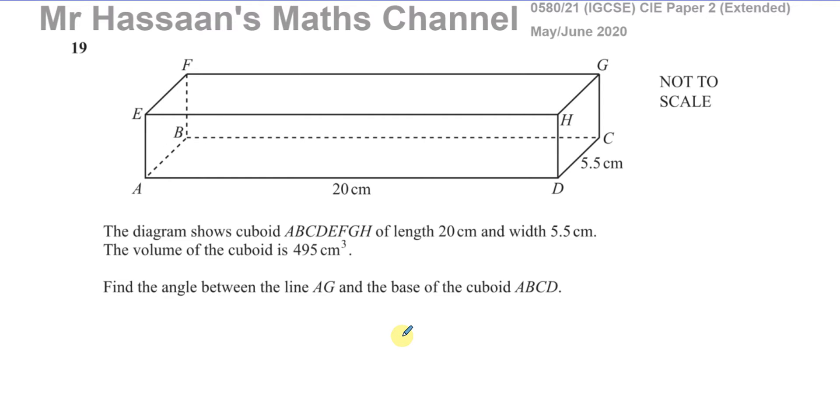This question here is about this cuboid A, B, C, D, E, F, G, H, of length 20 centimeters and width 5.5 centimeters. The volume of the cuboid is 495 cubed centimeters. Find the angle between the line AG and the base of the cuboid ABCD.